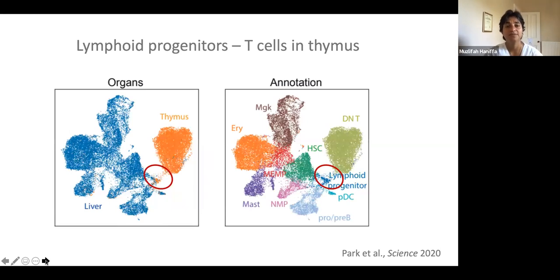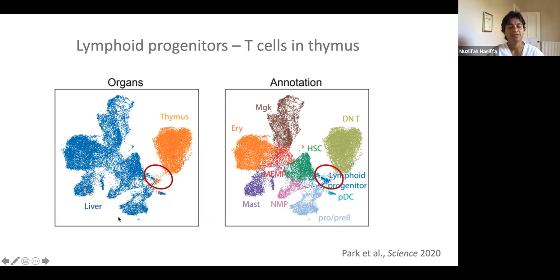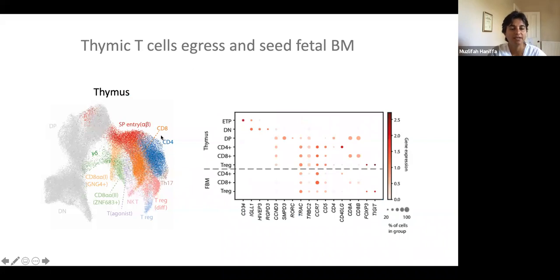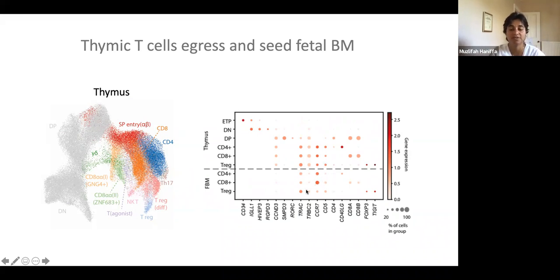What about the lymphoid progenitors? I'm going to focus a little bit on the T cells to show how this is occurring across anatomical space. T cells differentiate in the thymus. When we look at the liver progenitors and the thymus progenitors, you can see some of these cells annotated as lymphoid progenitors independently in the two datasets, and the ones in the thymus form the trajectory that differentiates into double negative T cells. You've got these lymphoid progenitors from the hematopoietic tissues that enter the thymus, then undergo T cell differentiation. We showed in our paper on the thymus the different flavors and types of single positives, invariant T cells, and regulatory T cells that develop. We find in the fetal bone marrow that these T cells subsequently egress the thymus and seed the fetal bone marrow, because they have the molecular features correlating with the differentiated single positive cells.